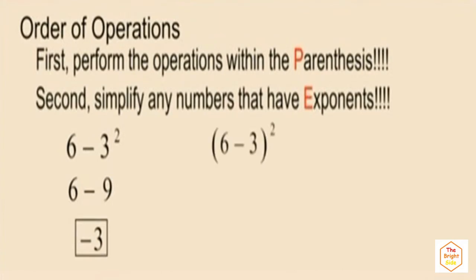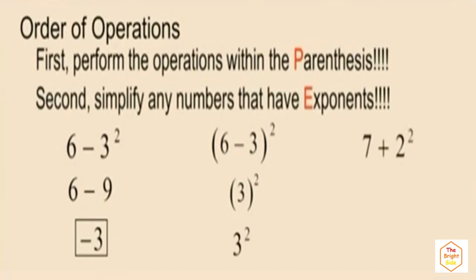Here we have six subtract the quantity three raised to the second power. We have parentheses, so before evaluating the exponent, we simplify the expression within the parentheses: six subtract three is three. We then have positive three squared, and since it's a positive number we don't need parentheses. Three squared is nine. Also: seven plus two squared — two squared is four, and seven plus four is eleven.